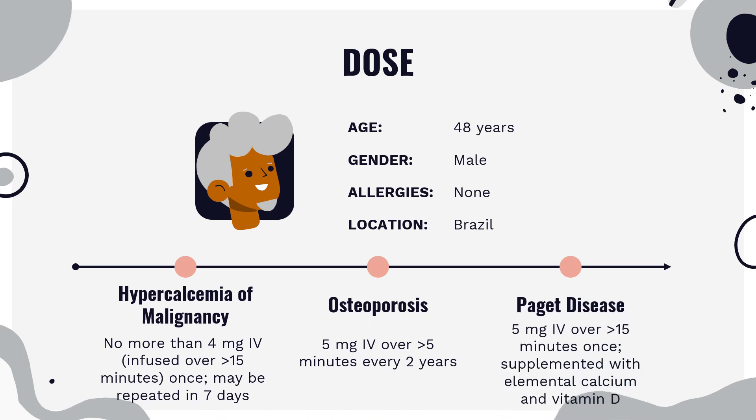Dose. Hypercalcemia of malignancy: Zometa, no more than 4 mg, infused over greater than 15 minutes, once; may be repeated in 7 days. Monitor serum calcium and wait at least 7 days before considering retreatment. Multiple myeloma and bone metastases from solid tumors: Zometa, 4 mg, infused over greater than 15 minutes, every 3 to 4 weeks.